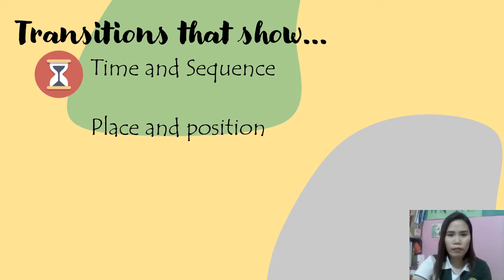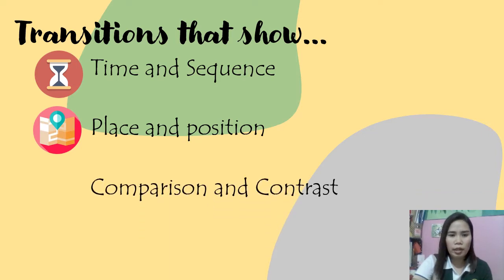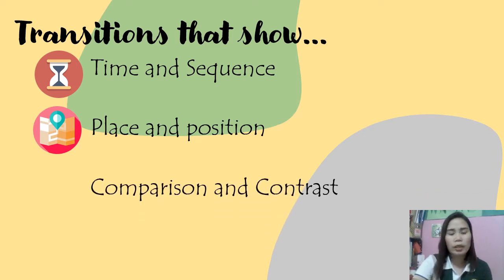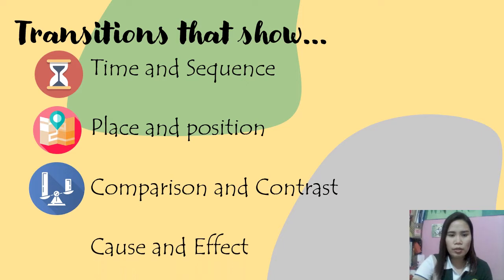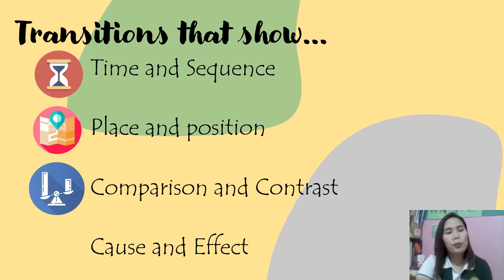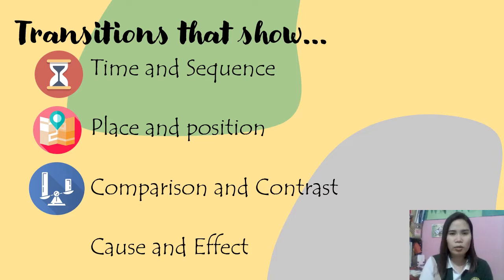Next we have place and position, which pertains to position or location. Then we have comparison and contrast, which covers differences and similarities. After that, cause and effect — this is the relationship or combination of an action and reaction, where something happens (a cause) that leads to an effect or result.